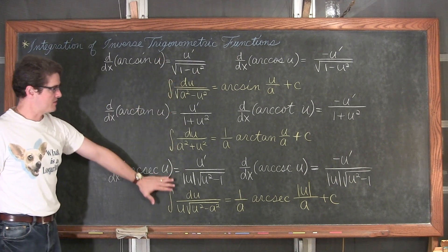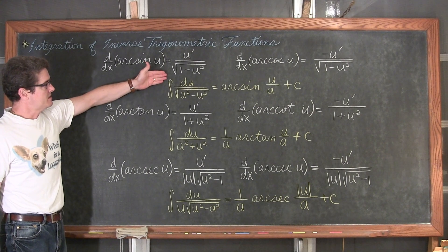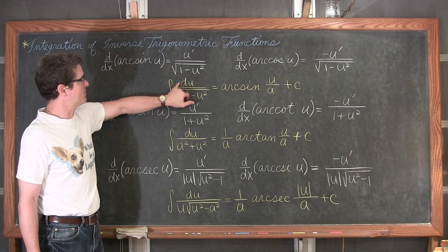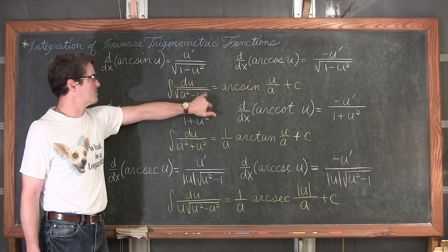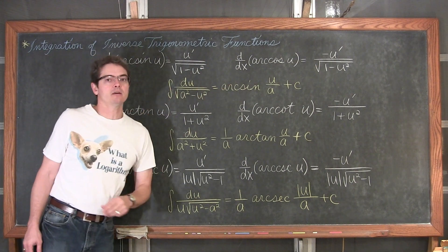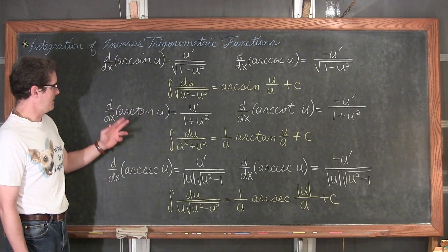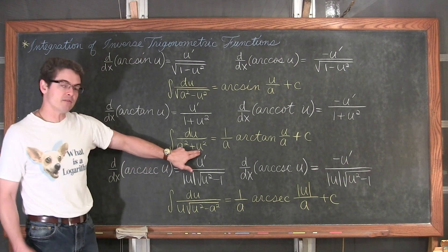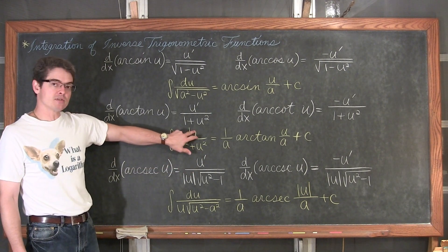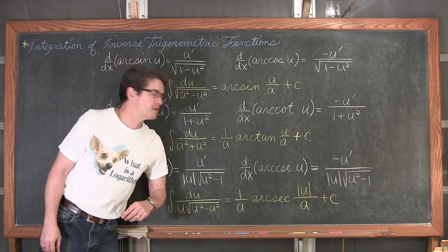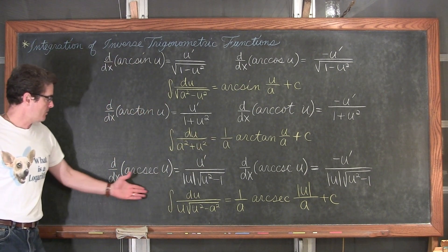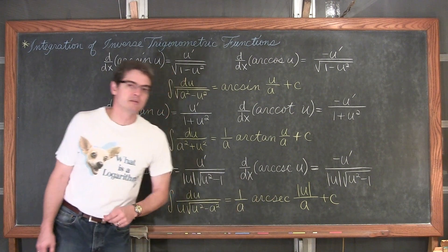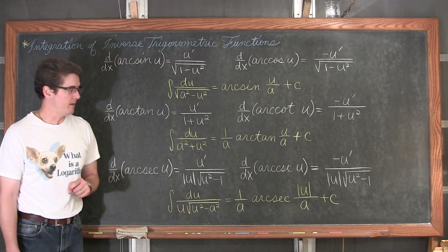When we go in the opposite direction and do integration, we can really just remember three of these because the simple sign change will give us arcsines. So we are going to focus on the positive rules — the ones without the negative signs. The indefinite integral of du over the square root of a² minus u² equals arcsin(u/a) plus C. The integration of du over a² plus u² equals (1/a) arctan(u/a) plus C. And another integration rule gives us (1/a) arcsec(|u/a|) plus C.